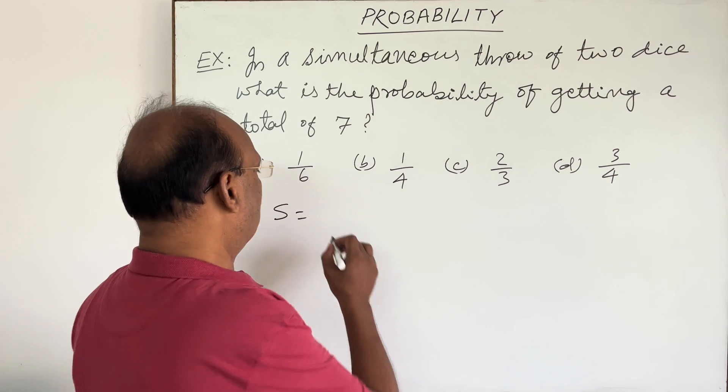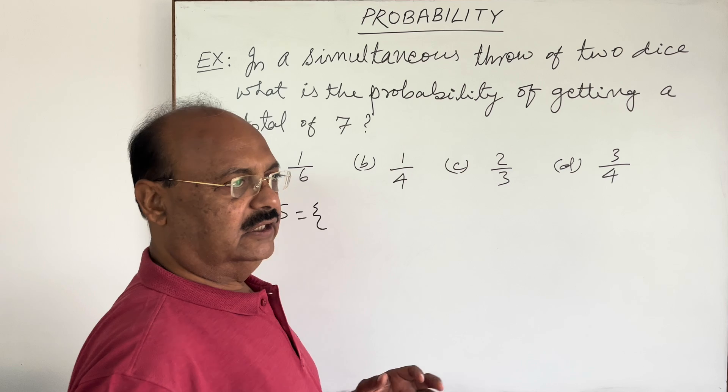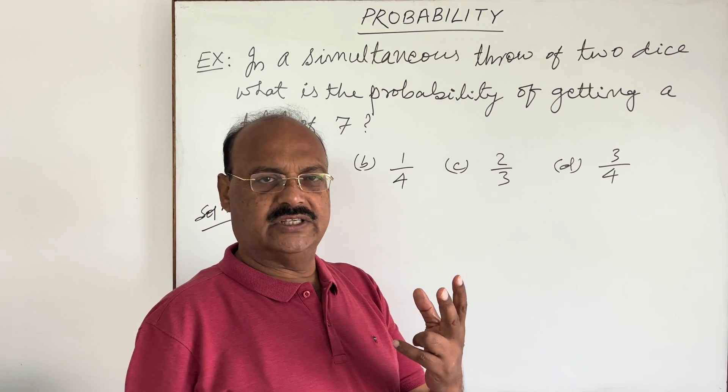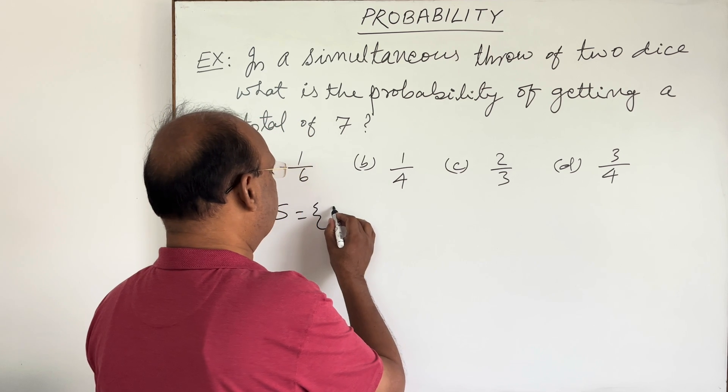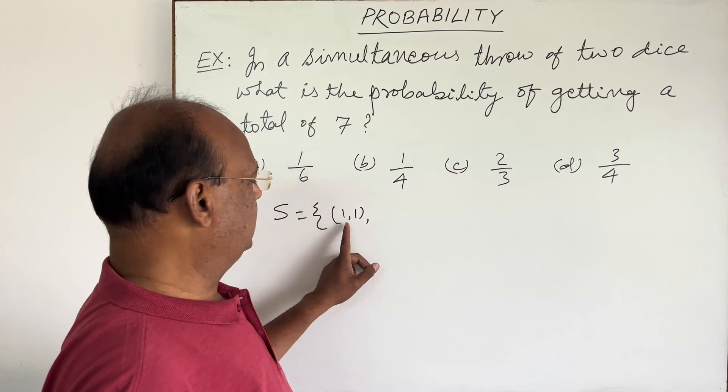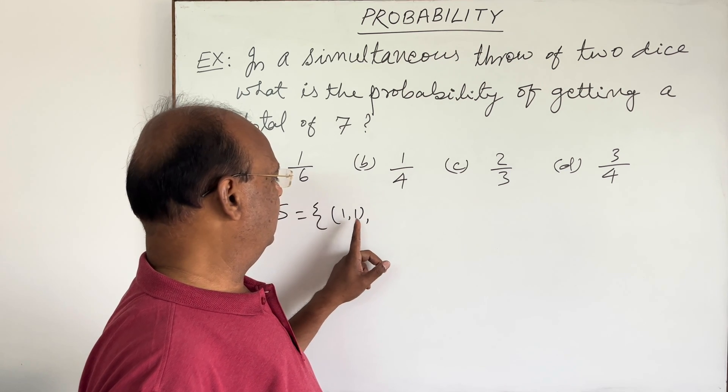Let us understand what are the possible outcomes. Two dice are thrown simultaneously. One possibility is (1,1) meaning one appears in the first dice as well as one in the second dice.